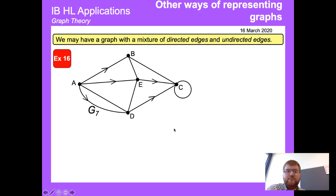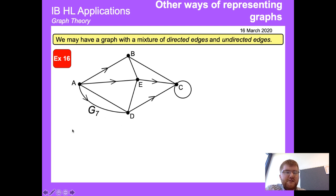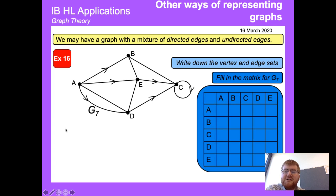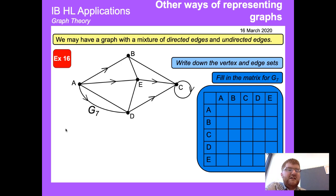We may also have a graph with a mixture of directed and undirected edges. For example, in G7 the edge B-C has no direction, and neither does edge A-D. I've set up a 5×5 matrix — pause the video if you need to — and see if you can fill out the adjacency matrix for G7.